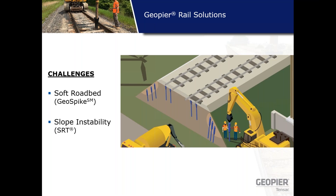How many of you out there have received a call from one of your customers related to soft ground or slope instability causing track alignment issues or ballast shoulder falling down the slope? During today's webinar we'll describe two GeoPeer technologies that can be used by rail owners, contractors, and design consultants to help repair these track hazards.